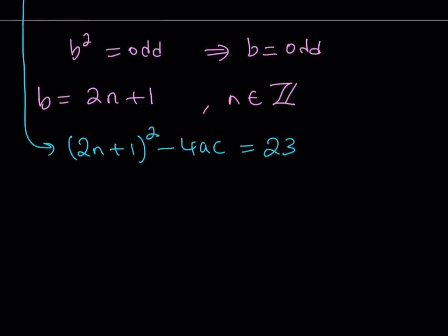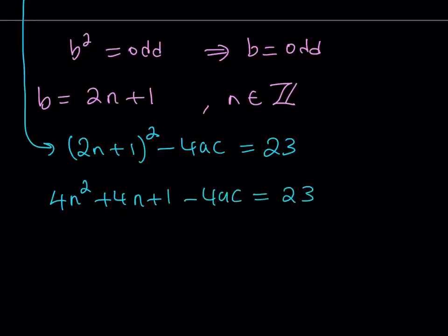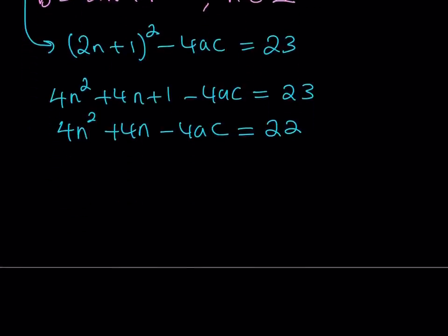Here, every variable — n, a, and c — represents an integer. Let's go ahead and expand 2n plus 1 squared: it is 4n squared plus 4n plus 1, minus 4ac, equals 23. Now it will be meaningful to subtract 1 from both sides so that we have all variables on the left-hand side, and this gives us 22 on the right.